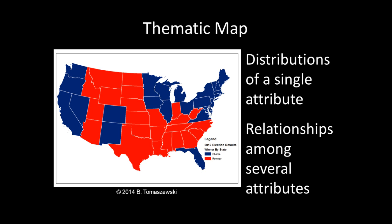Thematic maps convey a specific message or distributions of one or more attributes or relationships among several attributes. They are powerful devices for developing insights into geographical patterns and trends. Here we see a thematic map example: winner by state results of the 2012 United States presidential election. In this map, several regional patterns are evident. For example, note the cluster of red states in the southeastern part of the United States that voted for candidate Mitt Romney. Also note the clusters of blue states in the northeast United States that voted for candidate Barack Obama. Patterns like these can potentially reveal characteristics of the people who live in these regions such as religious or social values.